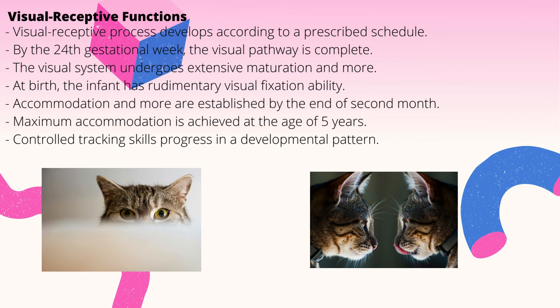At birth, the infant has rudimentary visual fixation ability and brief reflexive tracking ability. The visual system at this age is still immature compared with other sensory systems, and considerable development occurs over the next six months. Accommodation and convergence subsystems are established by the end of the second month, and stereopsis is evident at about two months of age. Maximum accommodation is achieved at the age of five years.